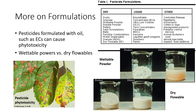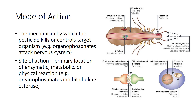When selecting a pesticide, drift, runoff, wind, and rainfall must be considered, along with soil type and characteristics of the surrounding area. Also be sure that the formulation is compatible with available application equipment. Most of this information is on the label. Prior to considering the use of a pesticide, read the label. The mode of action is the mechanism by which the pesticide kills or controls the target organism.